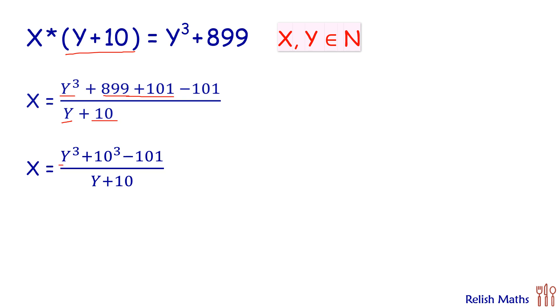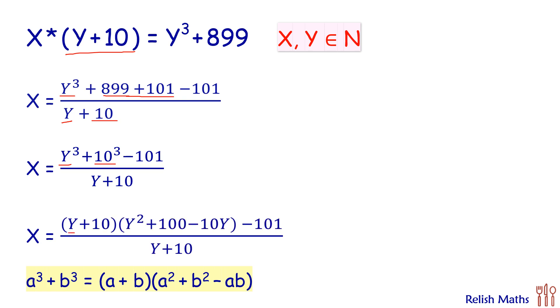Here we have A cube plus B cube, so let's apply the algebraic identity. We'll get X as A plus B times A square plus B square minus AB. In the numerator we have two terms: the first term is this and the second term is minus 101. Let's write this term separately.